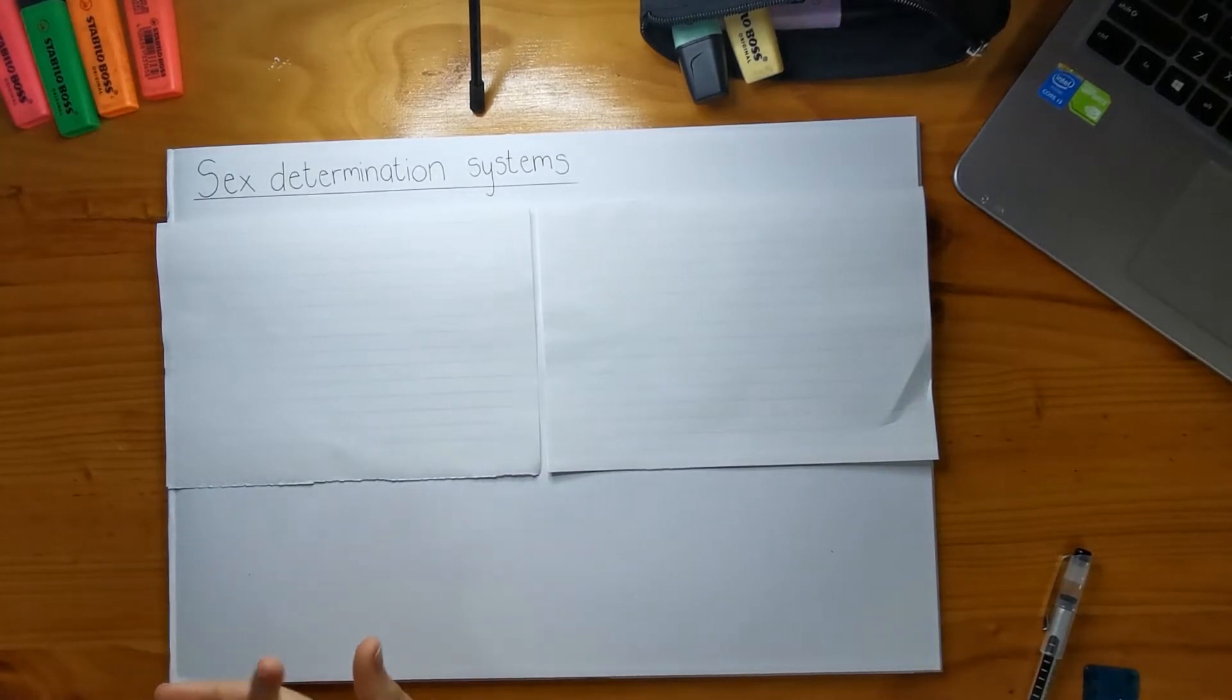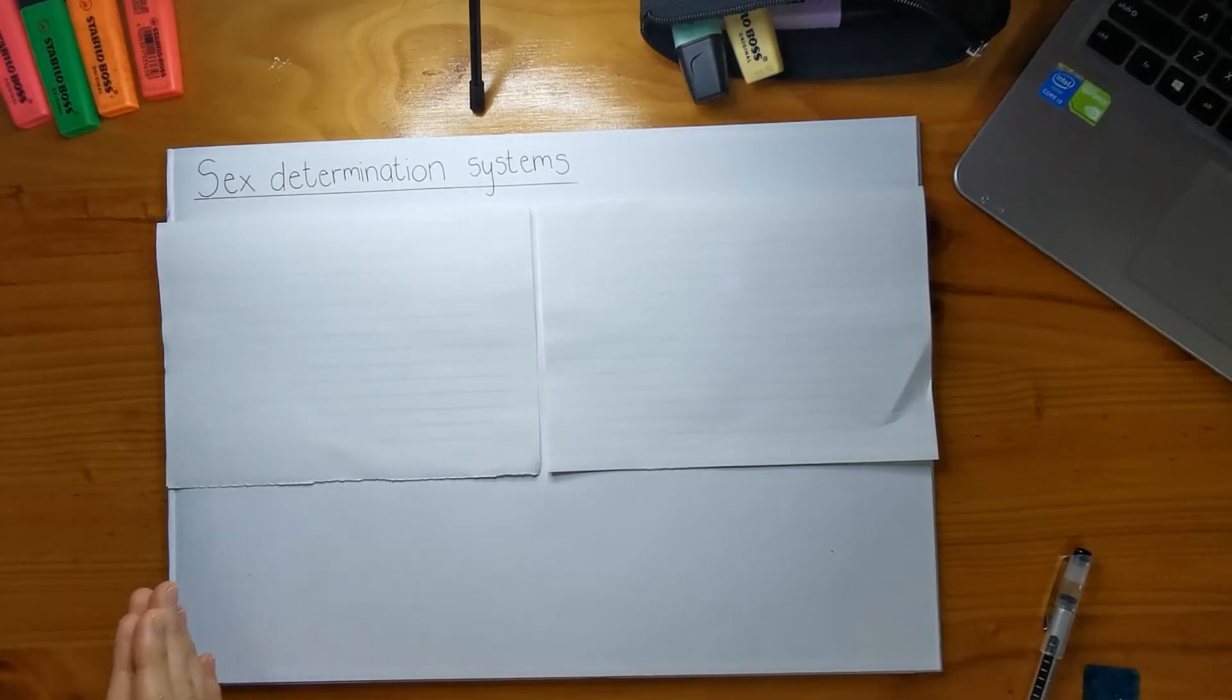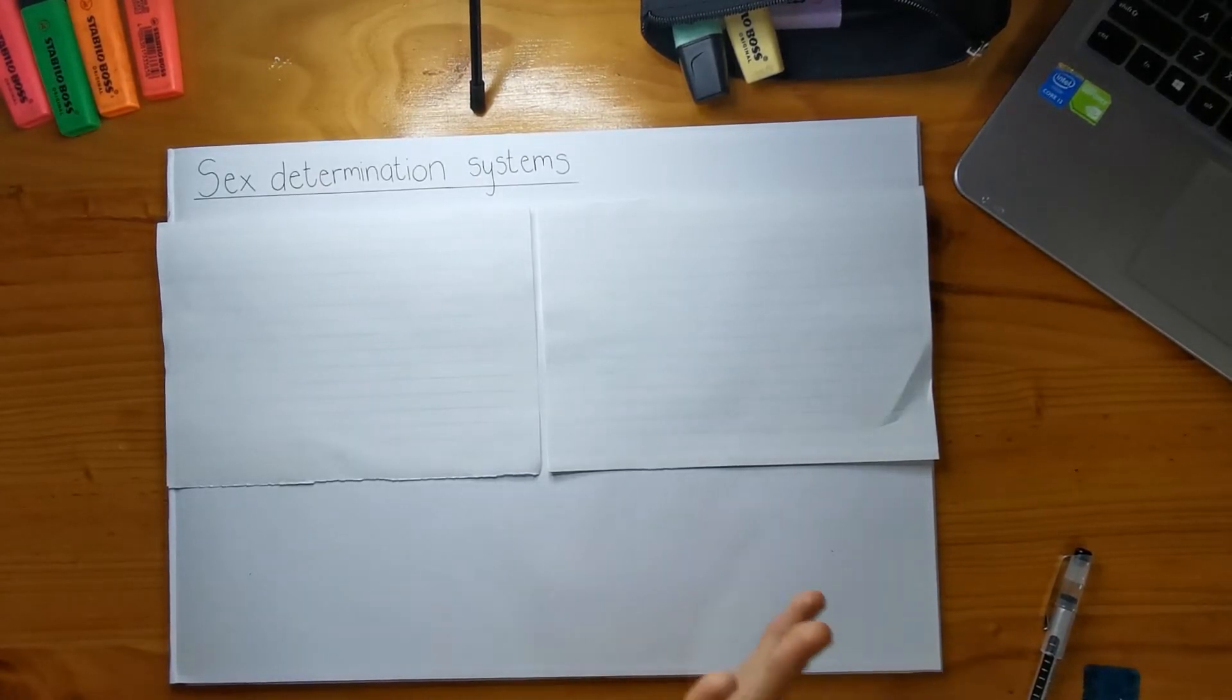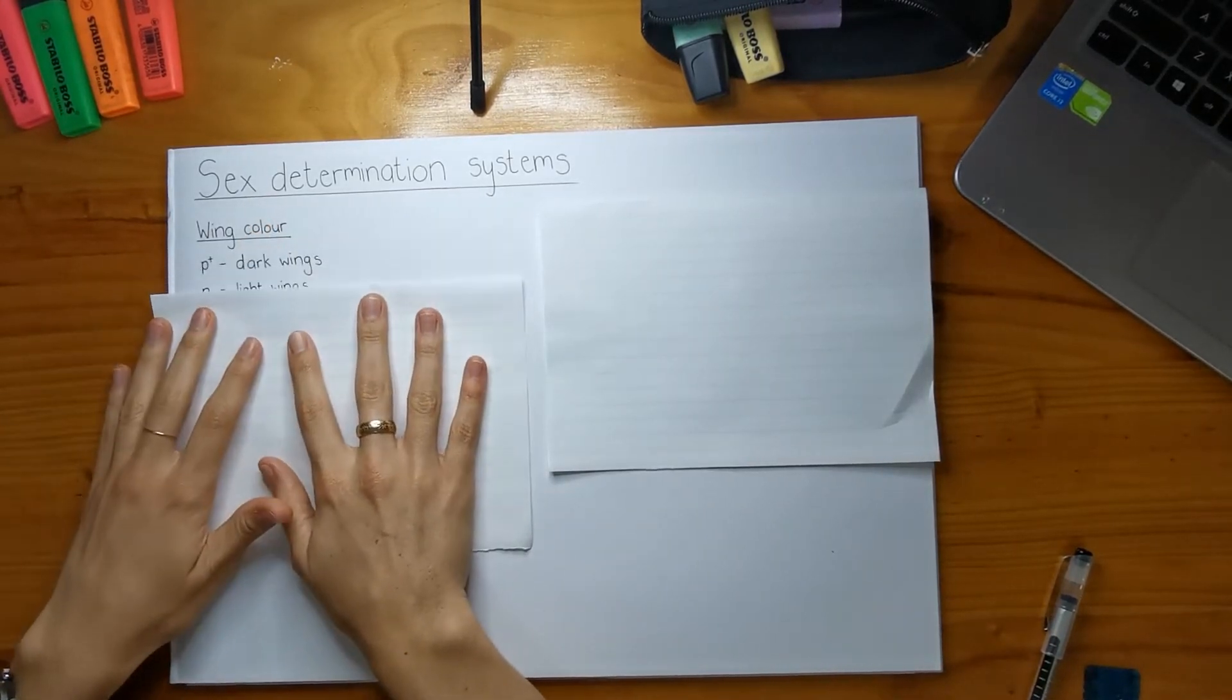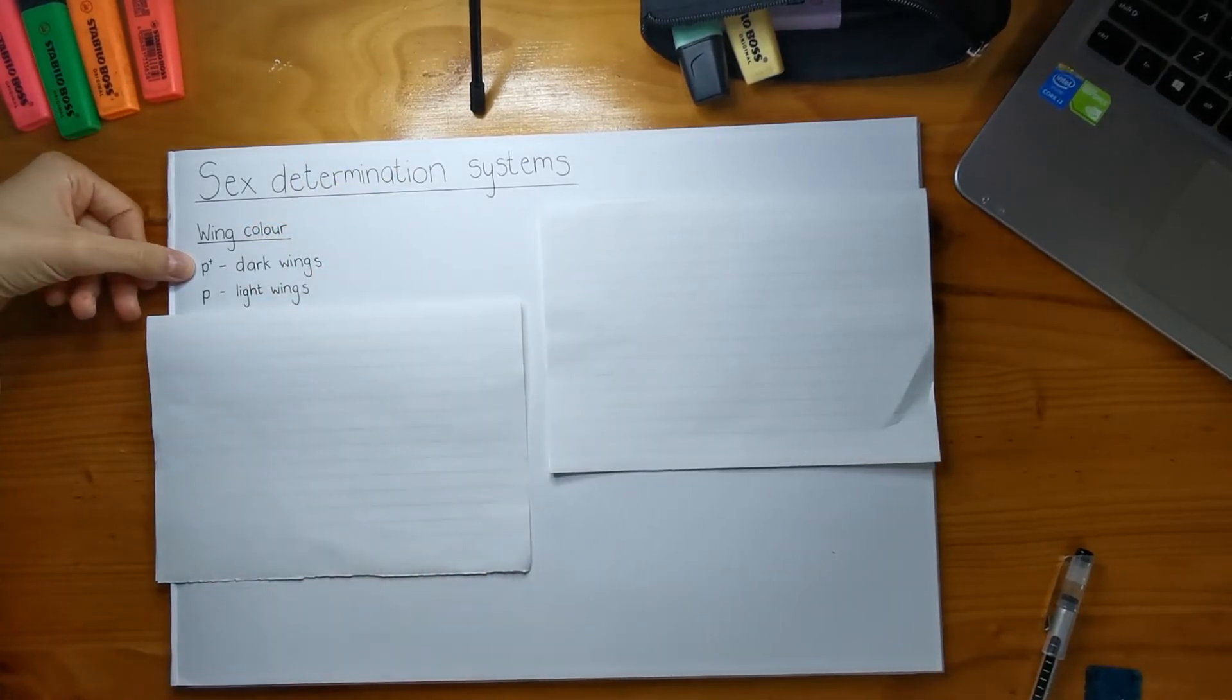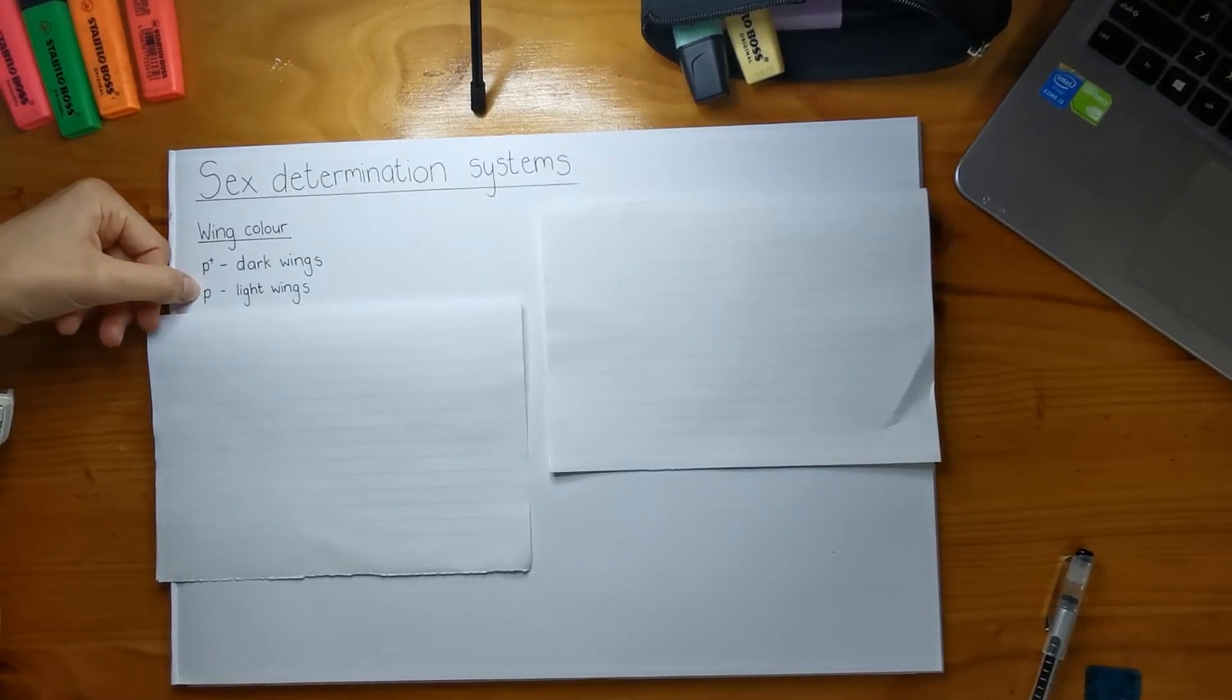Before I carry on I just want to say think of yourself as a detective and there's no real right way to start with a question. You have a hunch and now you need to follow that hunch and see if your hunch actually gets to the right answer at the end. The whole purpose of this question is that they want to know how this cross gives off the offspring that it does and we have to prove that our theory is the right theory.